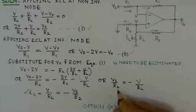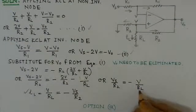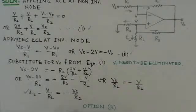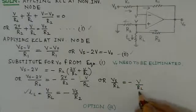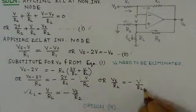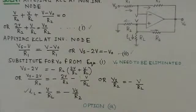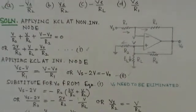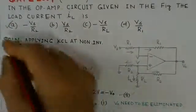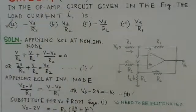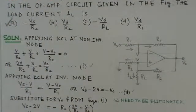But we have to find the value of IL, which is V upon RL. So this comes out to be, from this equation itself, minus Vs over R2. So option A here is the right choice for this problem. Thank you.